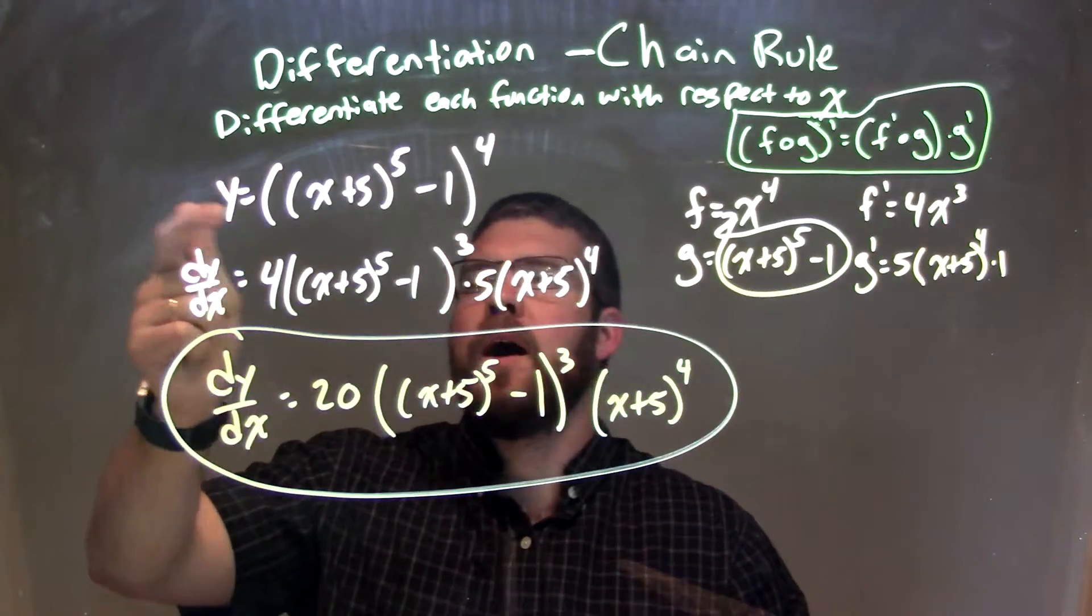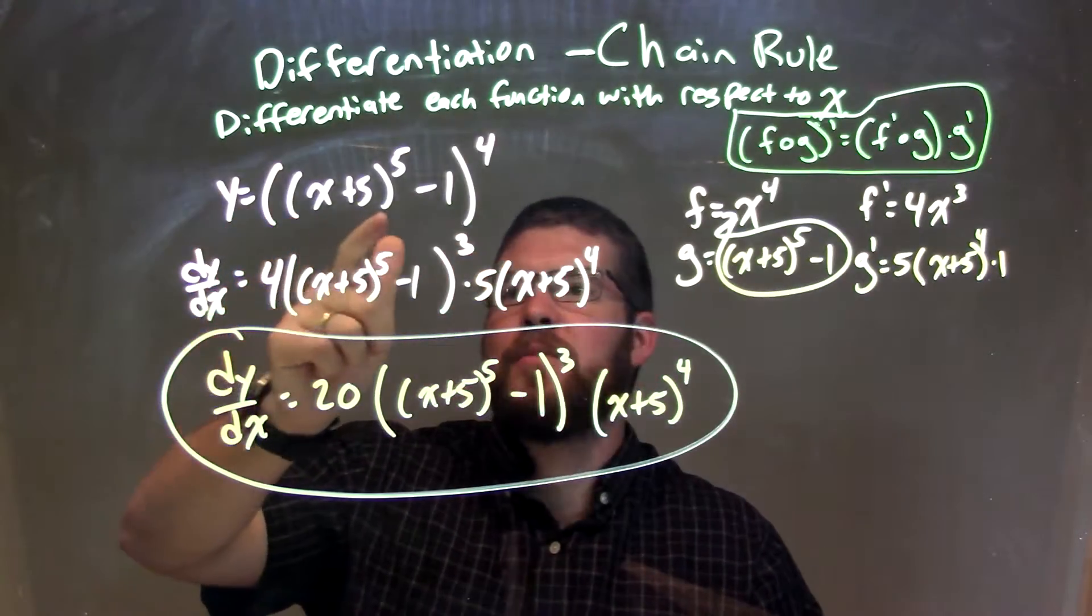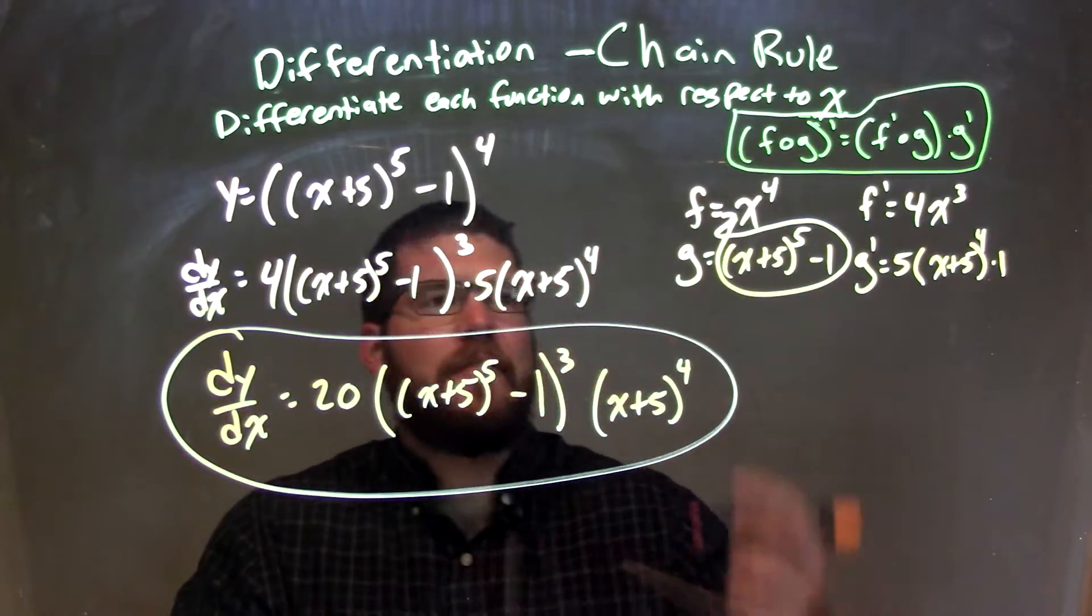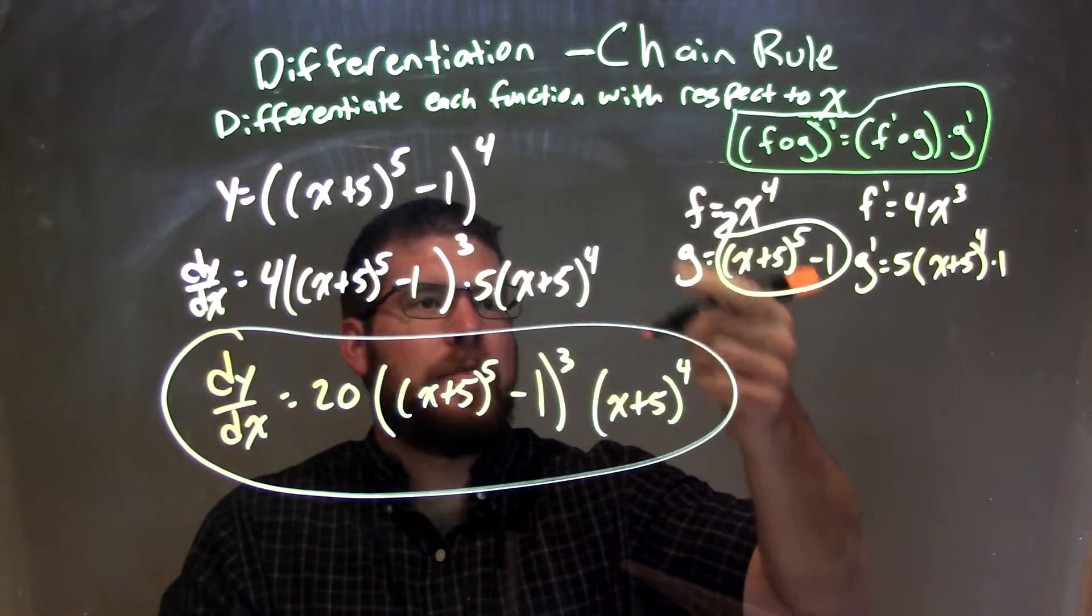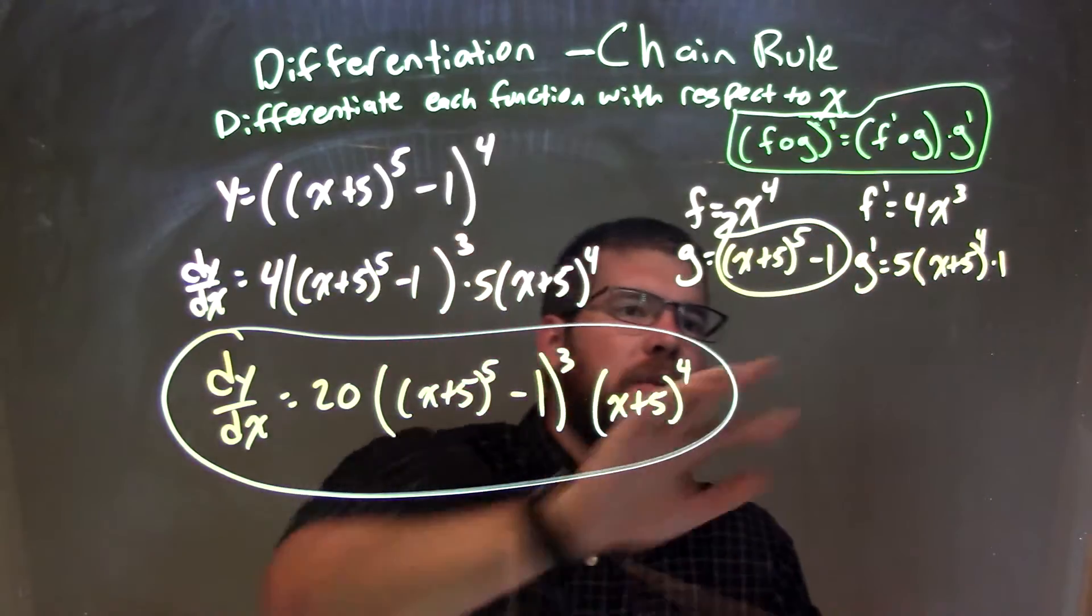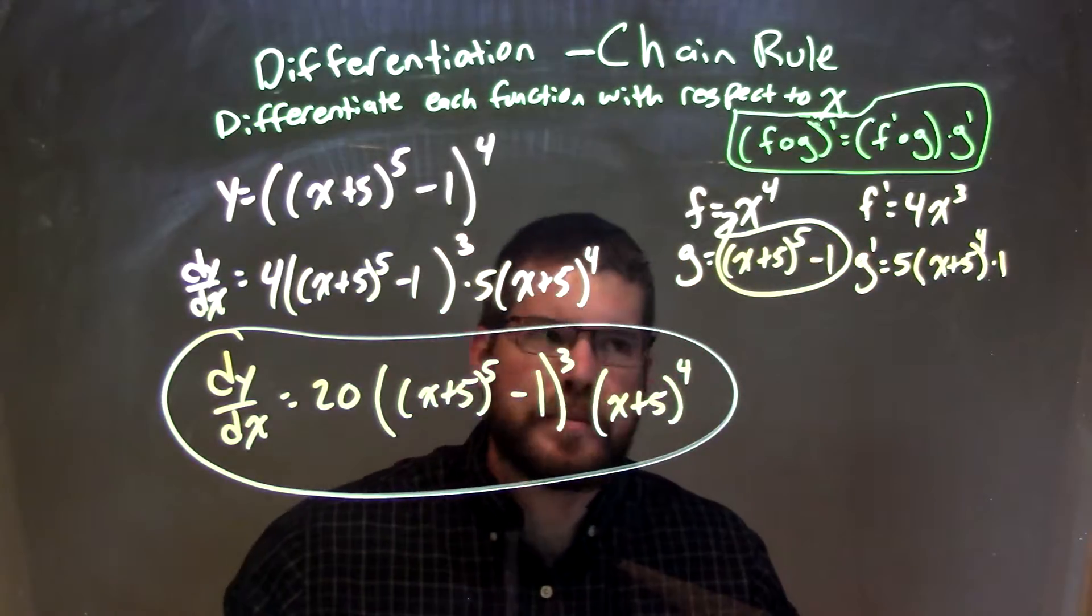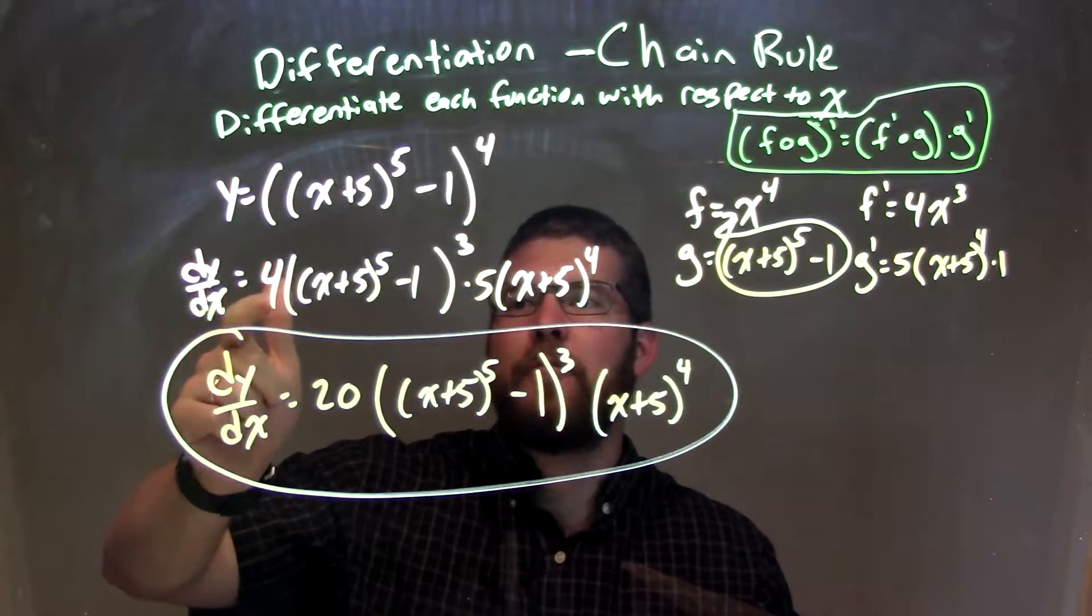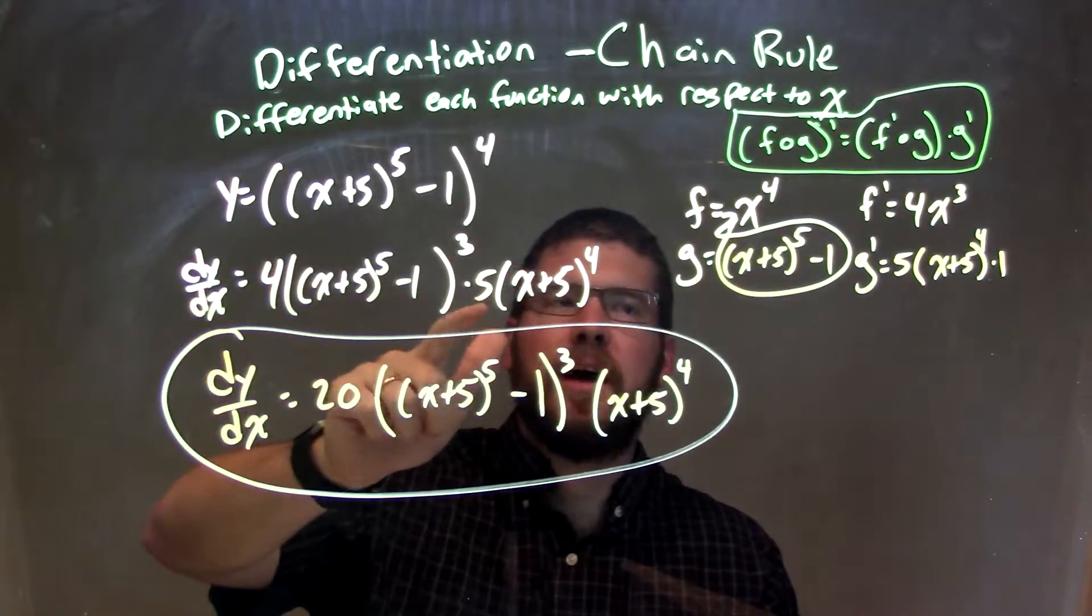So let's recap. We're given y equals, it's double parentheses, x plus 5 to the 5th power minus 1, and the second parenthesis to the 4th power. I found my f and g, or x is my f of g. And I find f prime and g prime from there. g prime was another chain rule going on. So now I took my derivative. I had f prime of g times g prime.